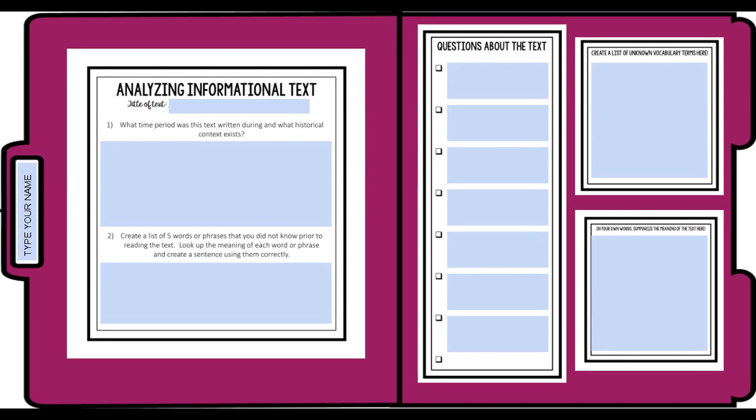Now let's use those other pieces. What time period was this text written during and what historical context exists? This might be pretty obvious, but can you use the text to back it up? Create a list of five words or phrases that you did not know prior to reading the text. Look up the meaning of each word or phrase and create a sentence using them correctly. Write down the questions that you have about the text, create your list of unknown vocabulary, and in your own words summarize the meaning of the text. We want to use these as a graphic organizer to keep our thoughts straight so we're not hunting for information every time we need to answer a question.